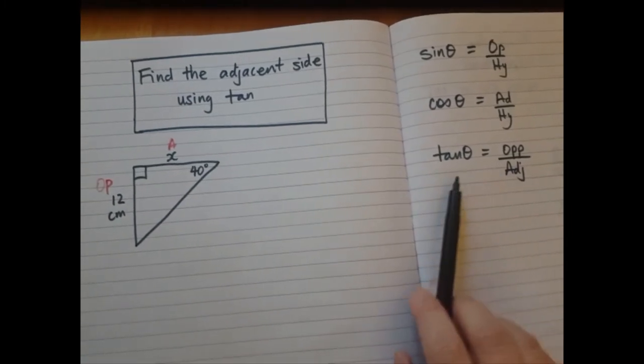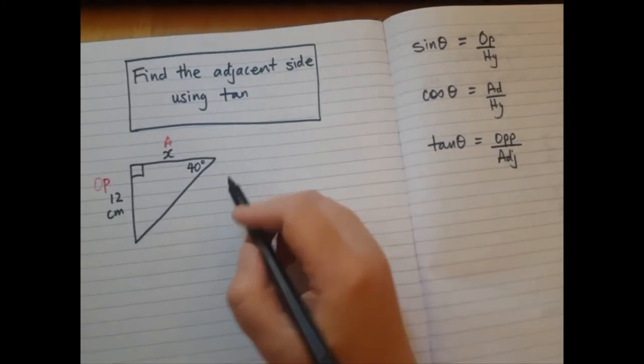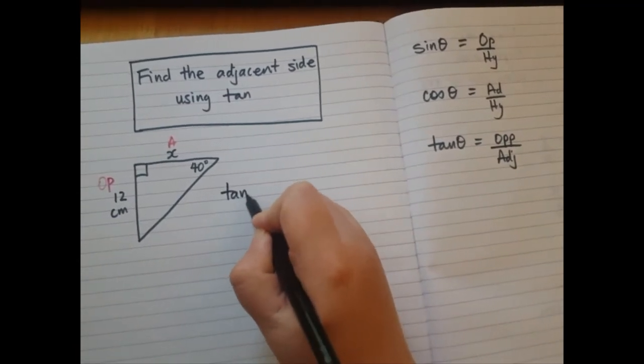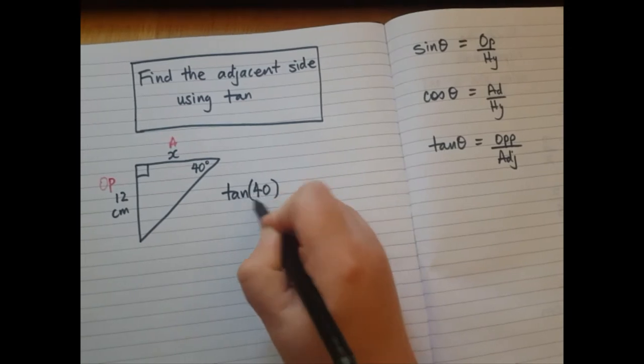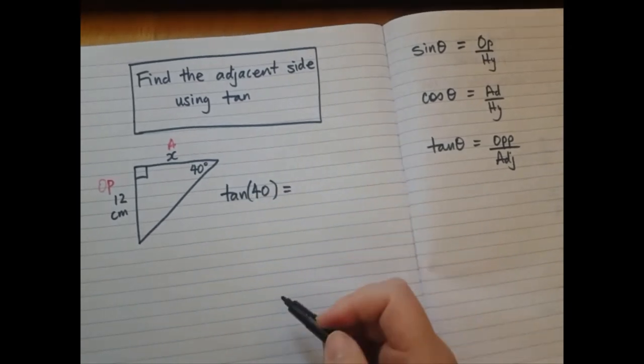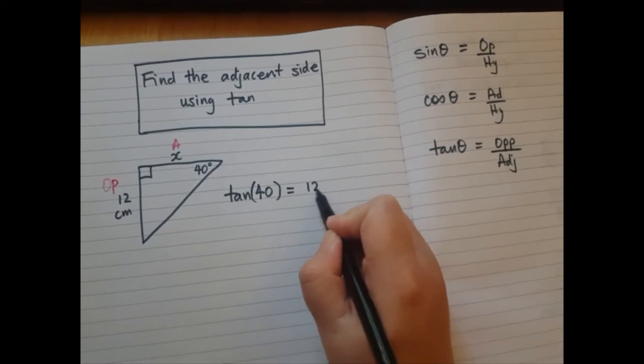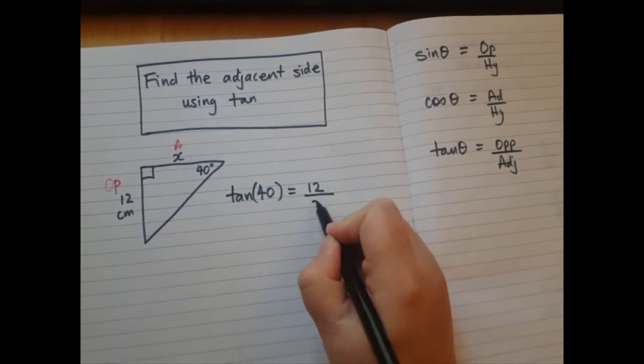So I'm going to write down this formula and replace the numbers that I know. First, tan angle. The angle is 40, 40 degrees. On the other side, opposite was 12, and adjacent was the letter x.